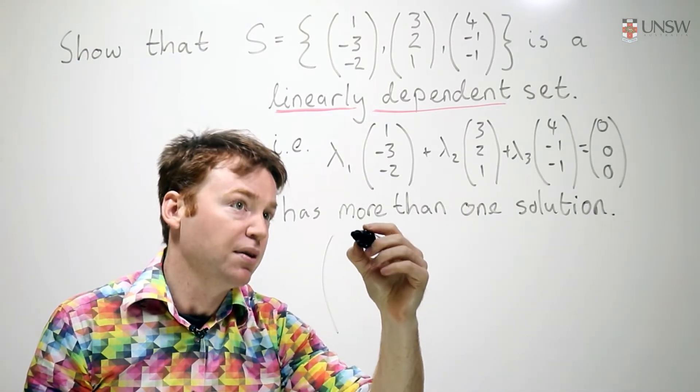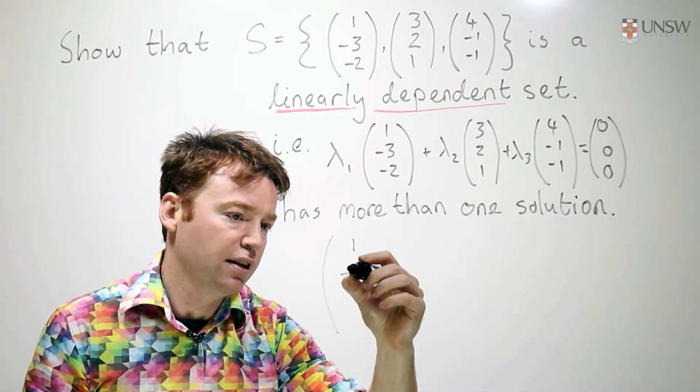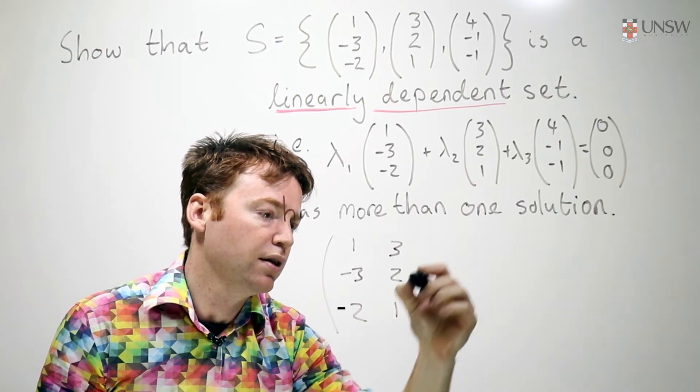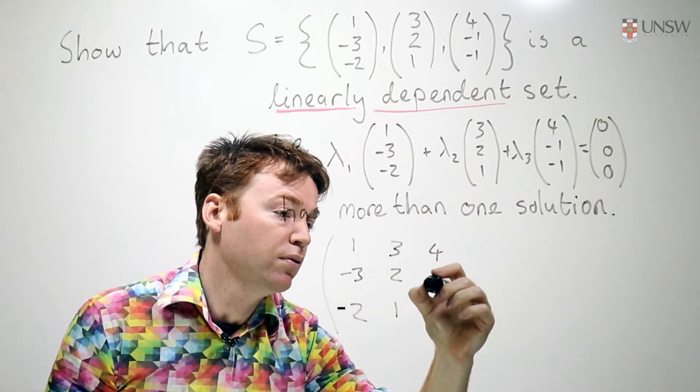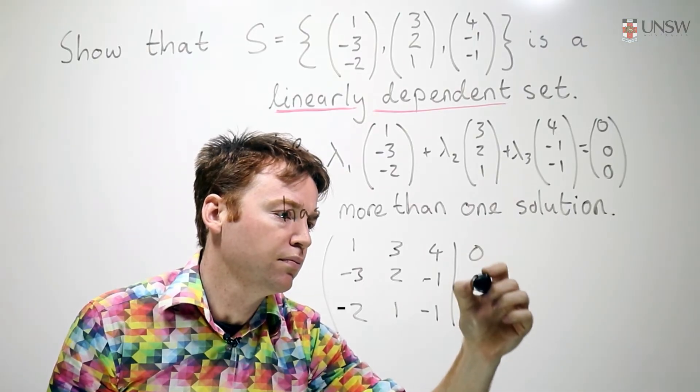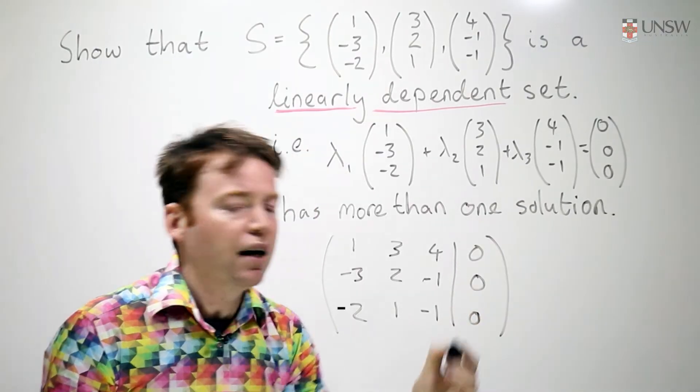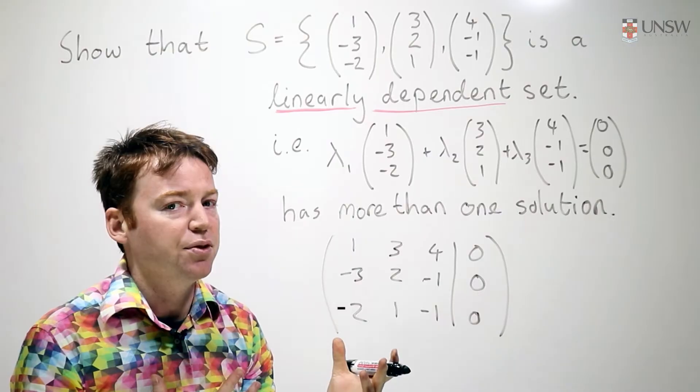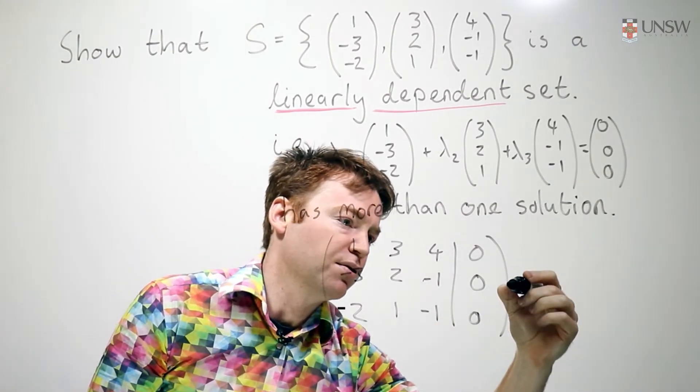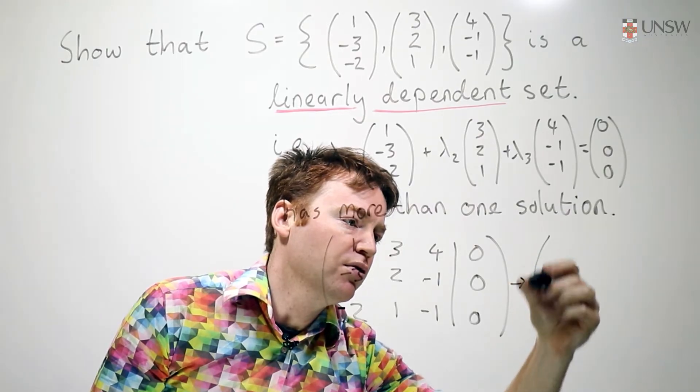So we're going to solve the system 1, negative 3, 2, 3, 2, 1, 4, negative 1, negative 1. And we're interested in how many solutions this has. And of course you can just row reduce this and I'll save you the trouble and just row reduce it for you.